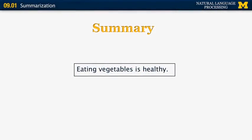In this example, the summary that we would like to get — although there's no summarization system currently that can do this — we want to get a short summary like this: eating vegetables is healthy. This is a very extreme example of text summarization, which is not practically feasible at this point. But there are many instances of existing summarization systems that work and produce meaningful summaries that are actually useful for users.